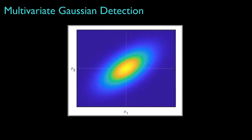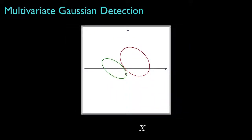To illustrate these processing steps, it's sometimes helpful to envision a two-dimensional Gaussian density similar to the one shown here. To represent the general form of this density, we might show an ellipse that represents the two-dimensional equivalent of plus or minus three standard deviations away from the mean. The important thing about this ellipse is that it shows the relative spread and orientation of this density. Using this idea, suppose the red ellipse represents the density for hypothesis 0, and the green ellipse represents the density for hypothesis 1.